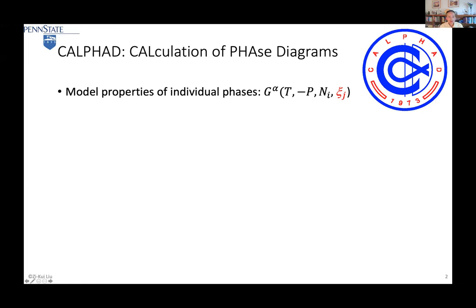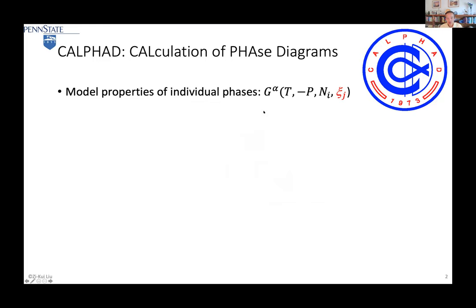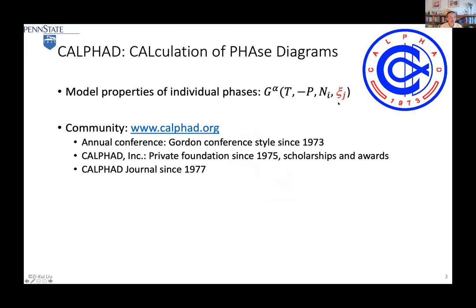I want to talk about CALPHAD. You can see we have three things: PyCALPHAD, SB, and CALPHAD. CALPHAD is about calculation of phase diagrams. It models properties of individual phases — basically free energy as a function of temperature, pressure, and composition. It's a very important internal degree of freedom field, meaning it applies to non-equilibrium states. CALPHAD has a community shown on www.calphad.org, with a conference since 1973, a private foundation since 1975, and a journal since 1977.